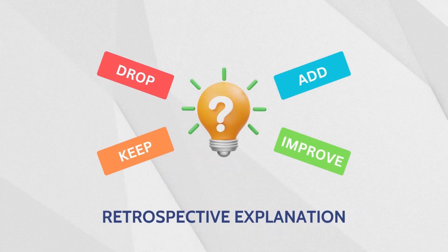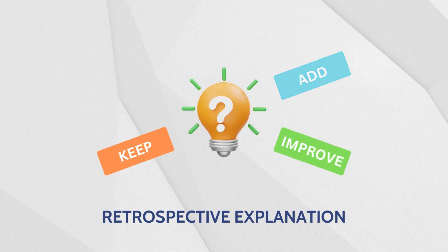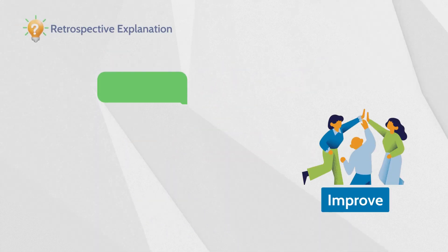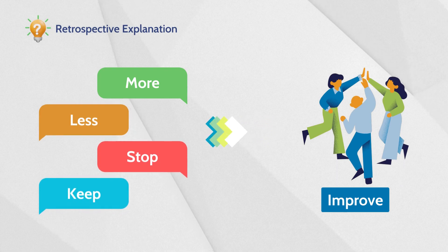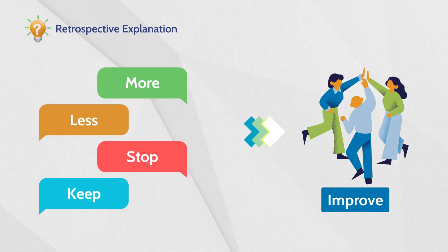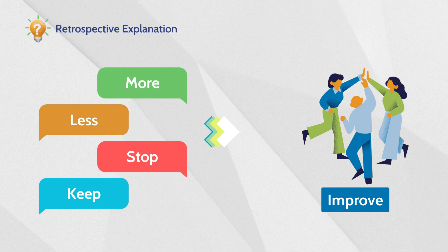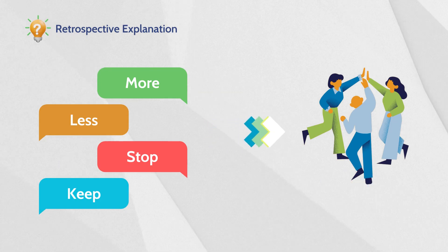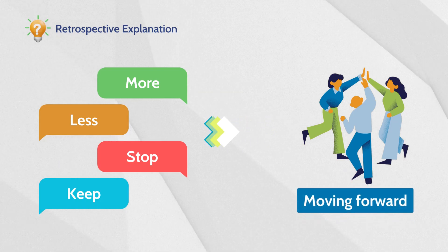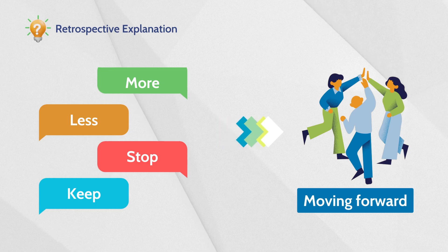First things first, what is a Retrospective? In Agile Project Management, a Retrospective is a meeting where the team reflects on their recent work and identifies ways to improve. It's a chance to learn from your mistakes and make sure you're always moving forward.